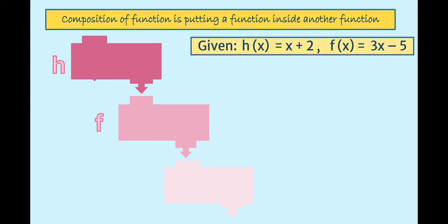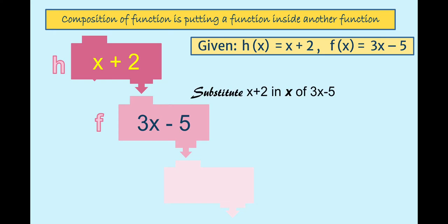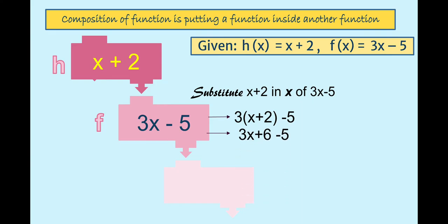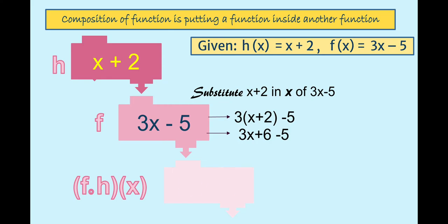For example, given h(x) = x + 2 and f(x) = 3x − 5, to find f(h(x)), we substitute x + 2 in place of x in 3x − 5. That gives 3(x + 2) − 5 = 3x + 6 − 5. Therefore, (f ∘ h)(x) = 3x + 1.